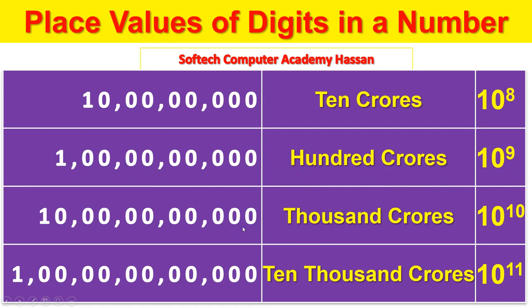Ones, tens, hundreds, thousands, ten thousands, lakhs, ten lakhs, crores, 10 crores — that is 10 to the power of 10.